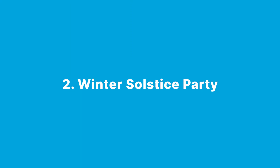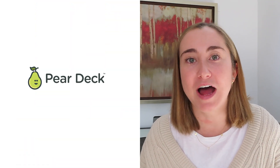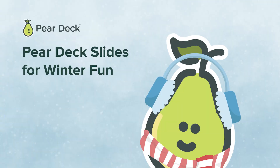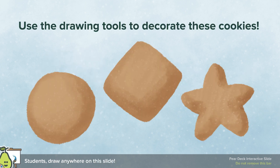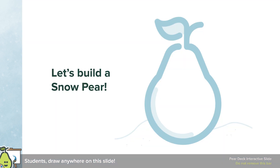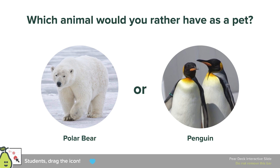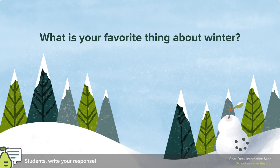My idea number two is to put on a winter solstice party. I love winter solstice parties because they're a really great way to make sure that every single student in your class feels represented before you go on to winter break. When thinking about putting this on virtually, Pear Deck is just the best tool out there to use. Pear Deck has so many incredible creative features — students can use the drawing features to decorate cookies or build a snowman virtually. Polls in Pear Deck are a very highly engaging strategy during remote teaching, where you ask students a fun question like, would you rather have a pet polar bear or a pet penguin? It can be a fun, silly classroom community tool before winter break.